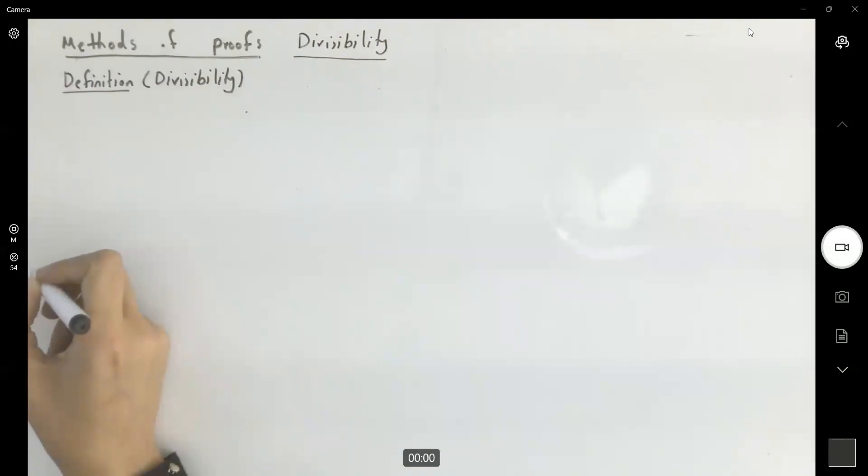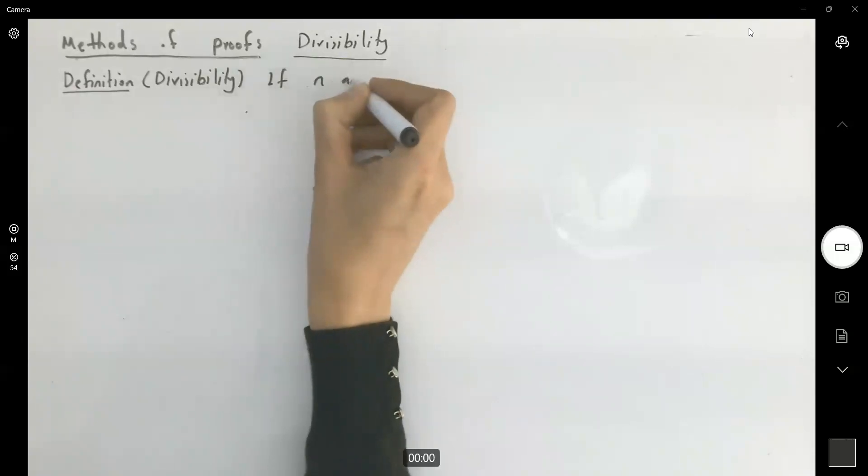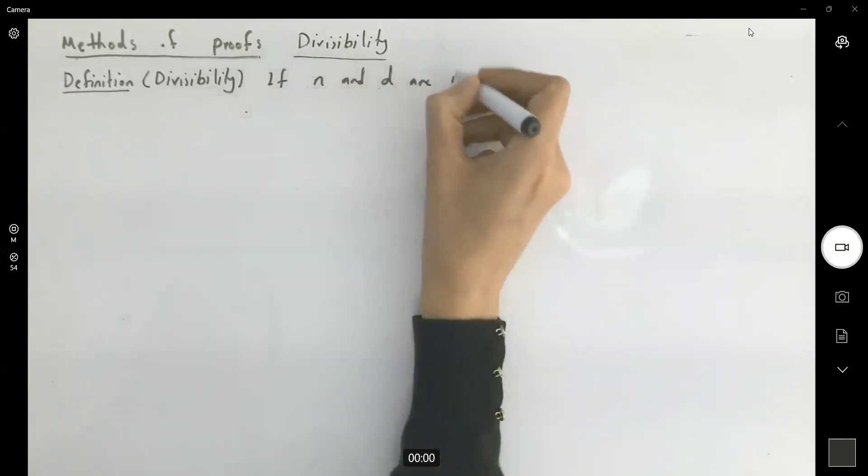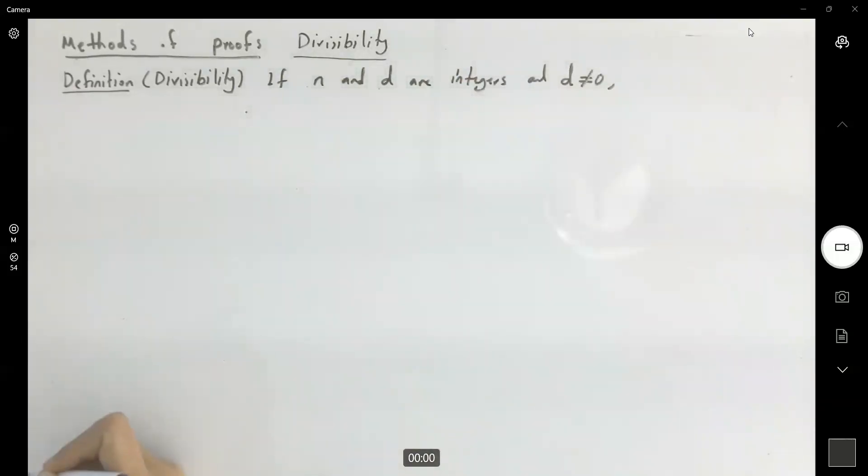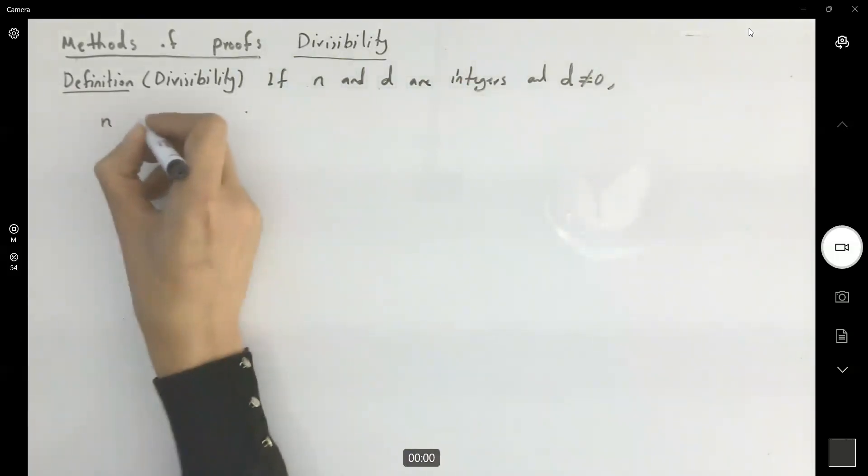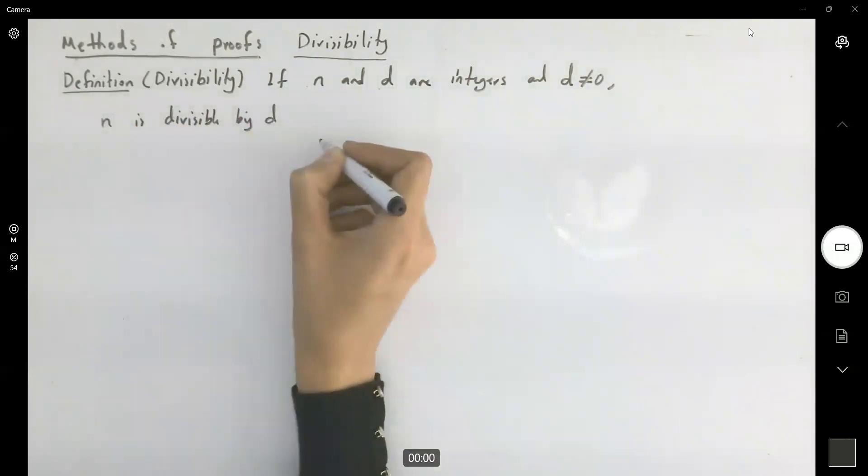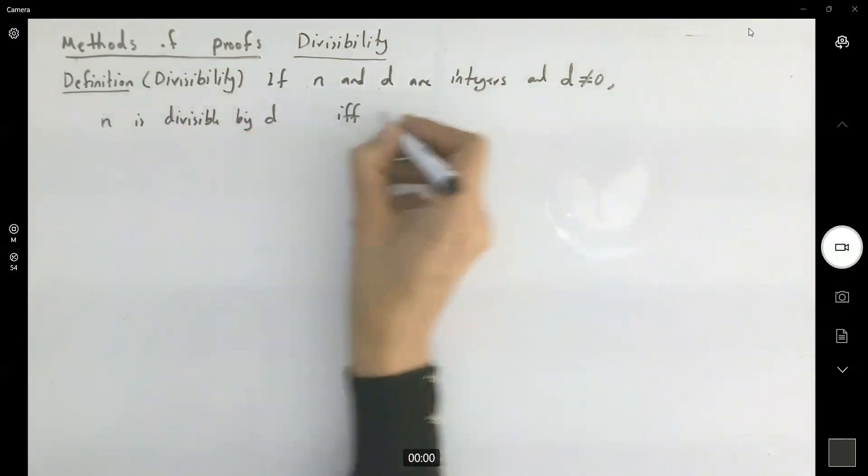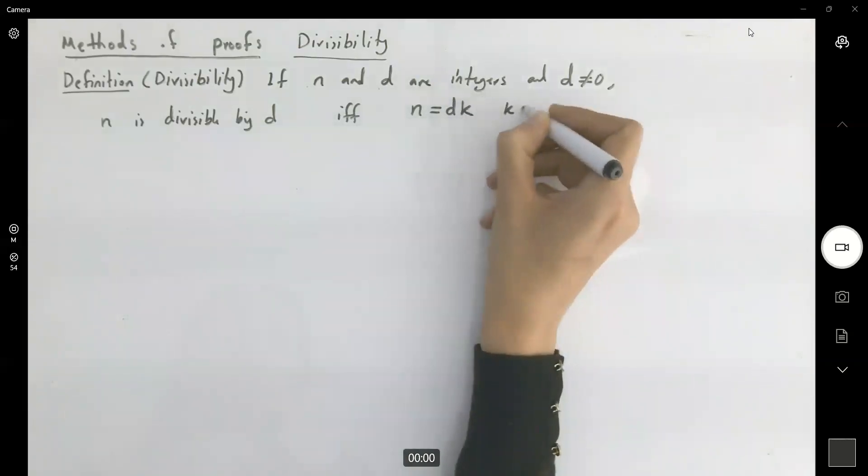Divisibility. Very good. If n and d are integers and d is not 0, then we say that n is divisible by d if and only if n is equal to d times another integer k.